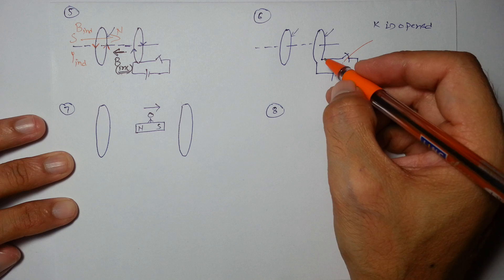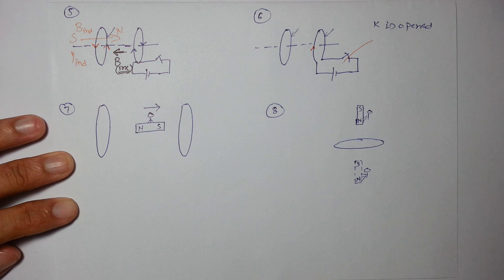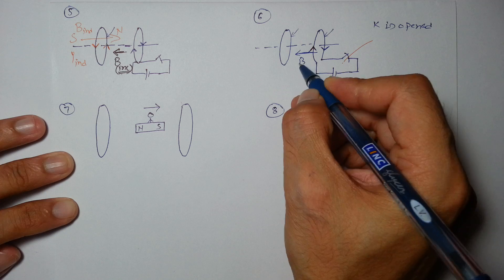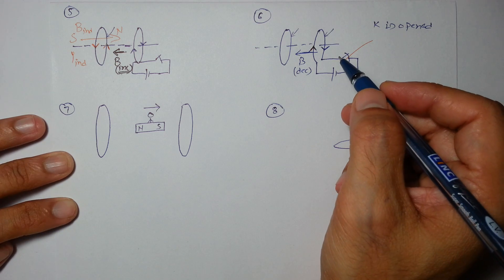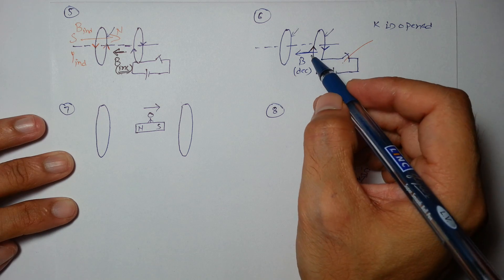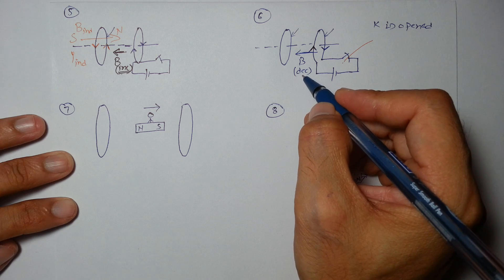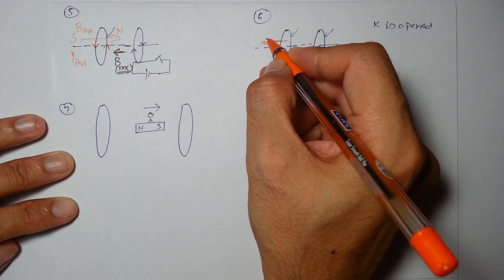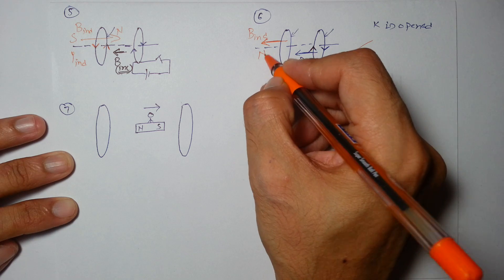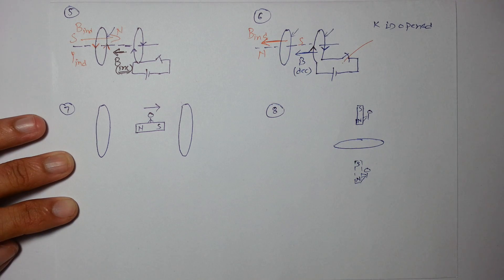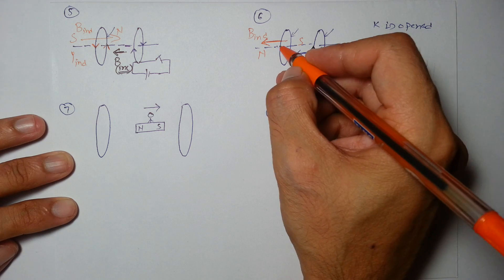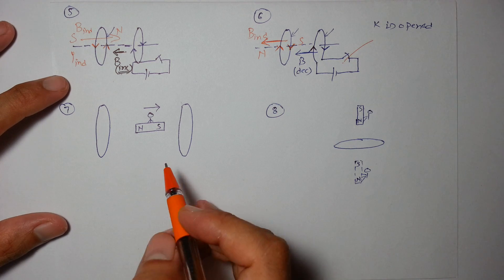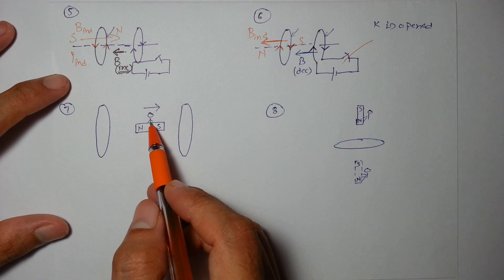When the switch is opened, the current which was flowing — because of which the magnetic field was in this direction — will decrease suddenly to zero. Because of this decrease, it will create an induced field in the same direction to oppose this decrease. So B induced will be in this direction; north will be created here and south here. The current in this portion of the wire will be upward and in this portion downward.